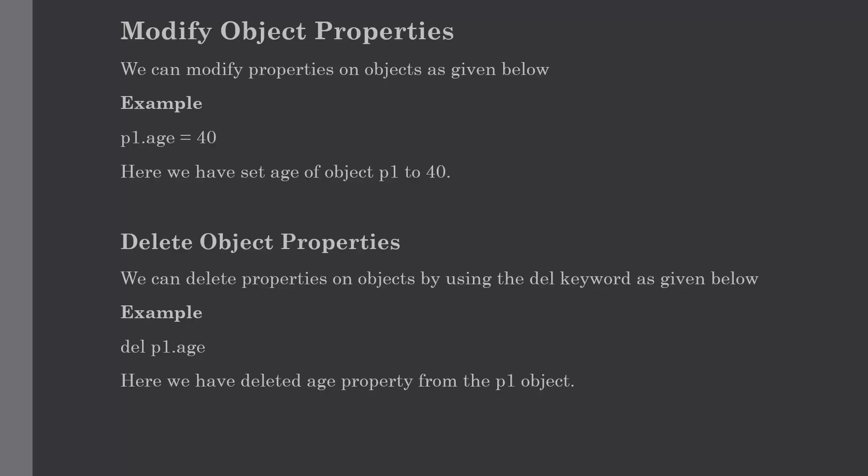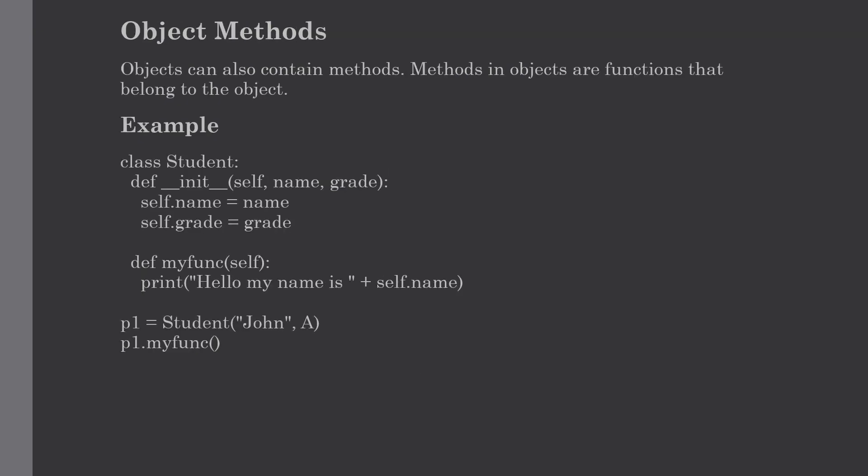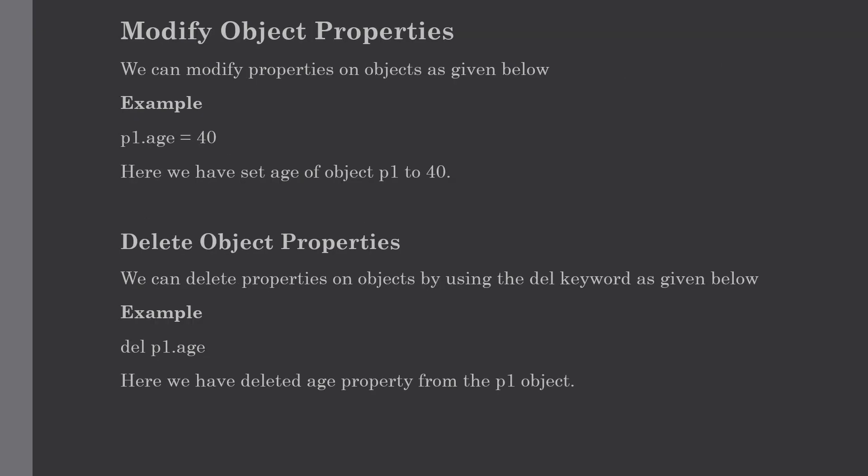Our next topic is how to delete the object properties. We can delete properties on objects by using the del keyword, as shown below. In this example we have deleted the age property from the p1 object. Let me show you with some example.